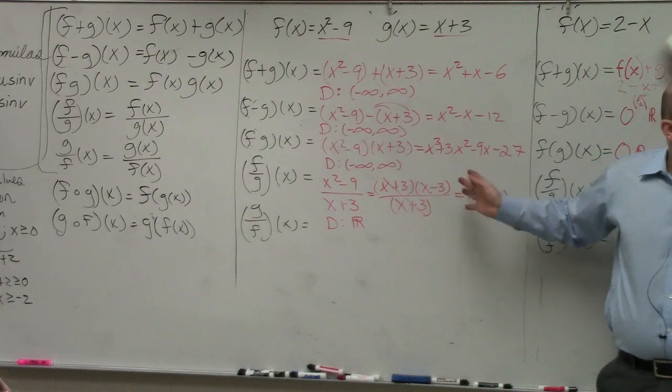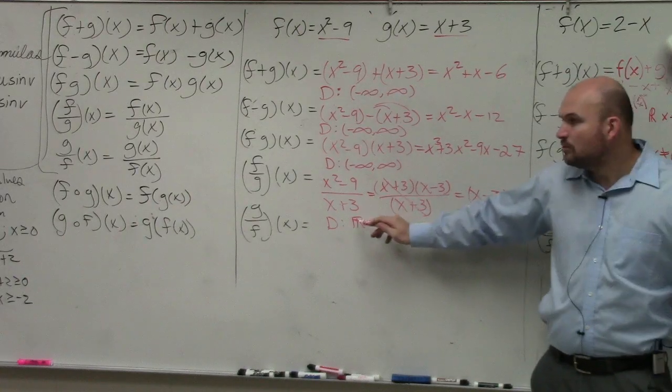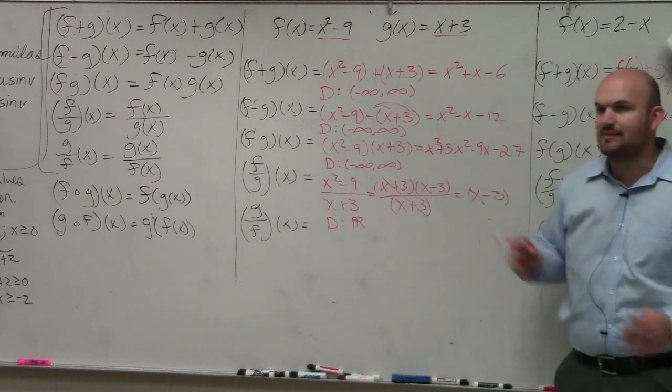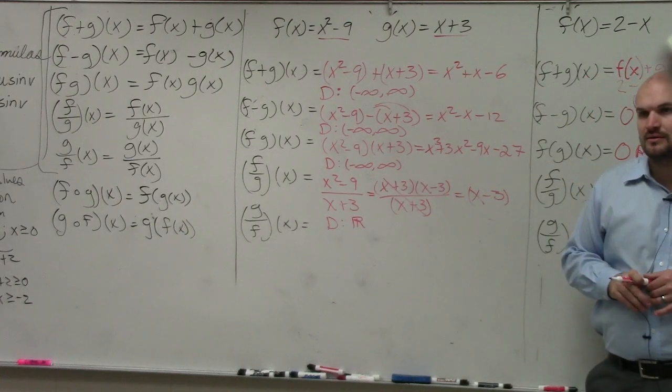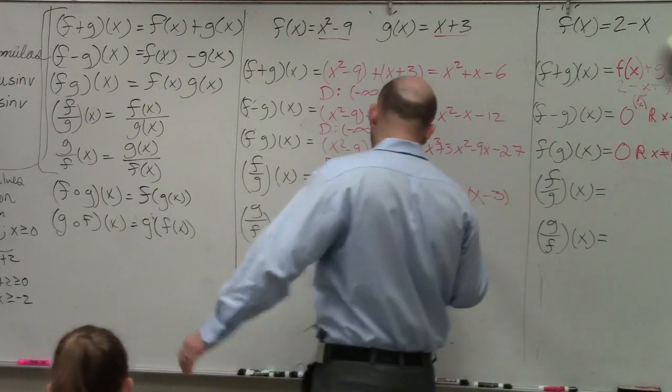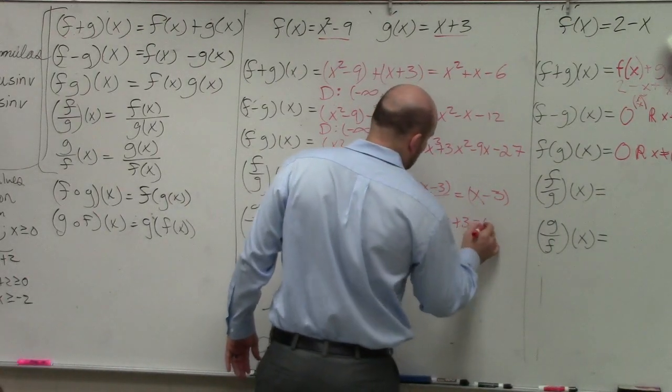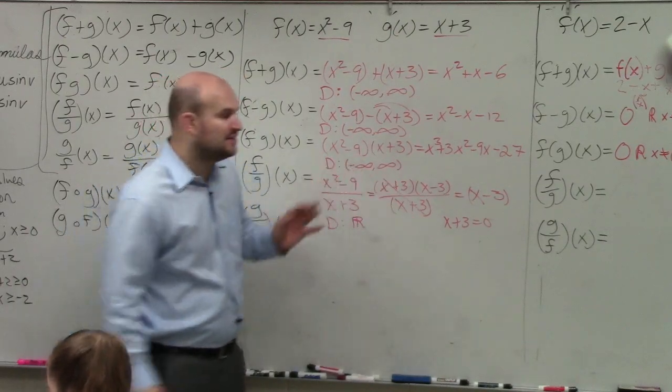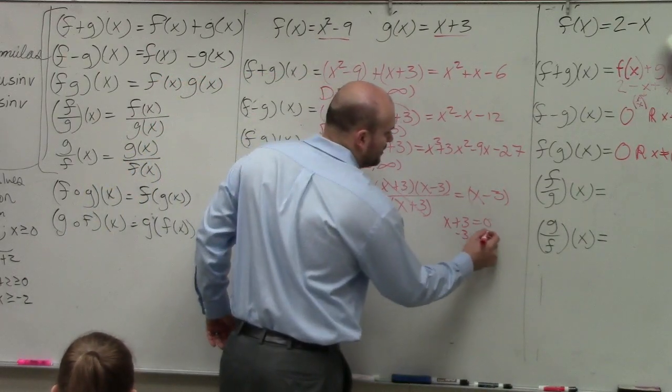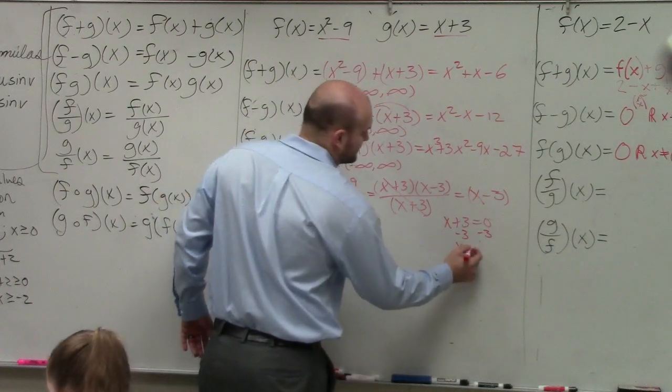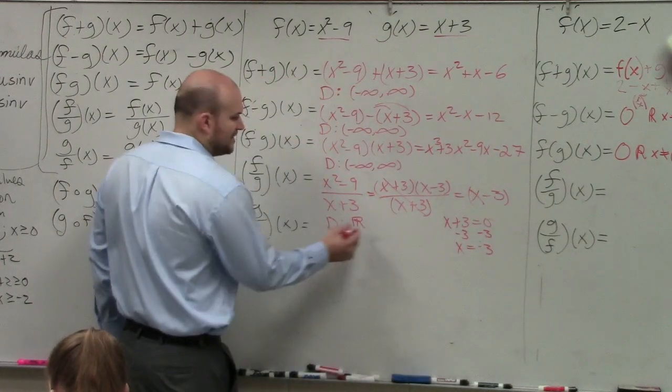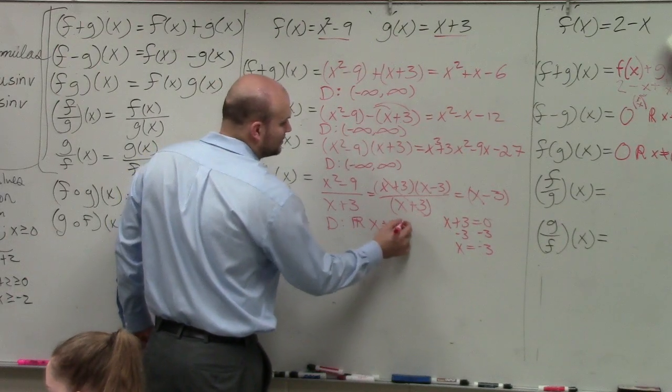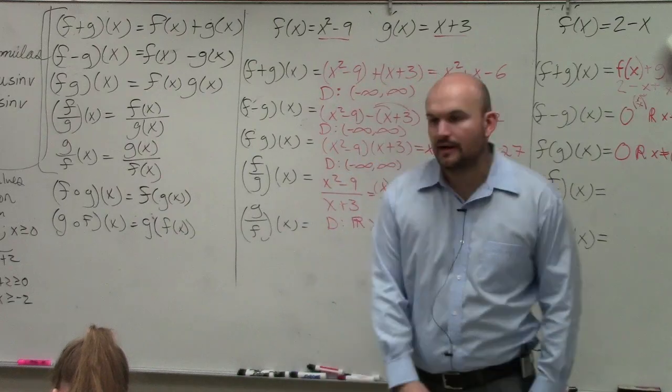because we'll talk about this later. This is actually going to produce a hole. When does my domain equal 0? For what values does that make it equal 0? x plus 3 equals 0, right? Just set your denominator equal to 0. That will tell you the values that it's going to equal 0, which is negative 3. So therefore, all real numbers except x cannot equal negative 3.